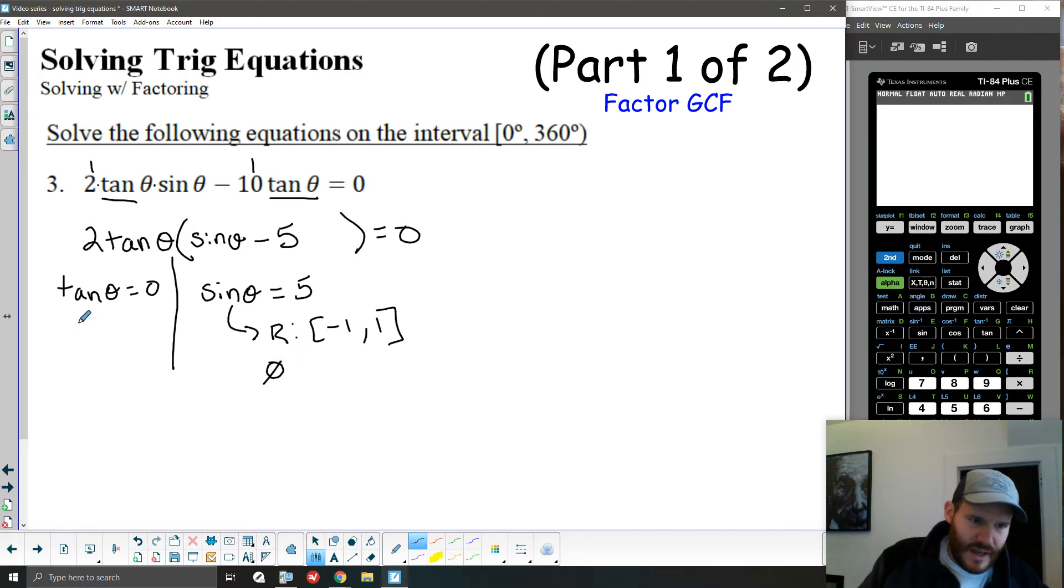However, in the second side, where tan theta is equal to zero, we can solve that by really considering the unit circle. So on a unit circle, which has a radius of 1 and coordinates x and y, we remember that the definition for tan theta on this unit circle is that tangent is the ratio of y over x.